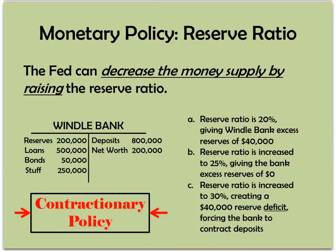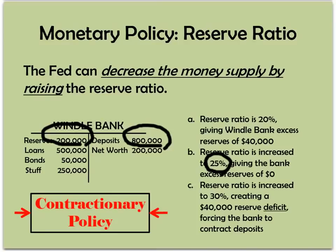Conversely, the Fed could decrease the money supply by raising the reserve ratio. Same scenario: at a 20% reserve ratio on $800,000 in deposits, the required amount is $160,000, and the bank has $200,000 in reserves — $40,000 extra they could lend. But if the Fed raises the ratio to 25%, the $200,000 they hold is exactly what they need, so they can't make new loans. Raising it further to 30% creates a $40,000 reserve deficit, forcing them to contract deposits or stop making loans altogether — a very contractionary effect on the money supply.